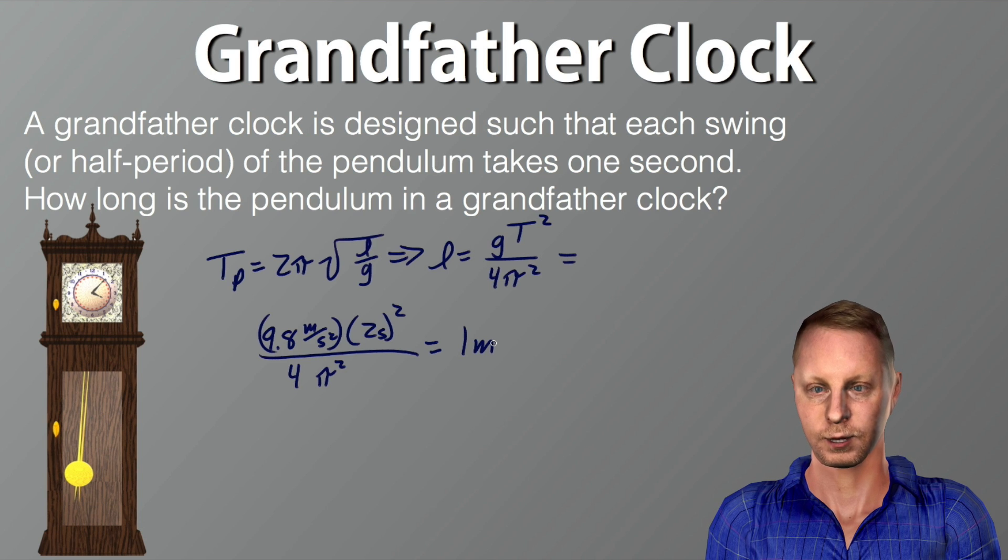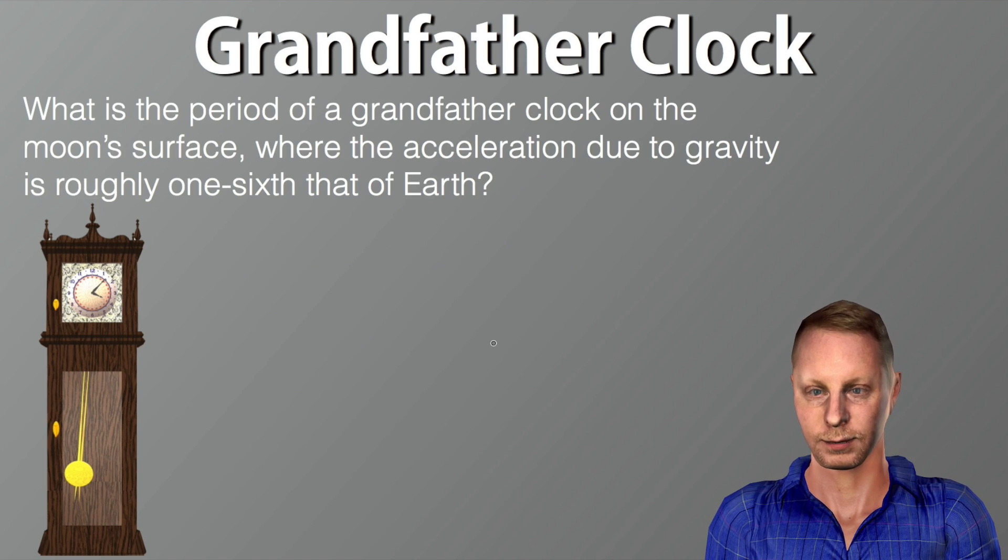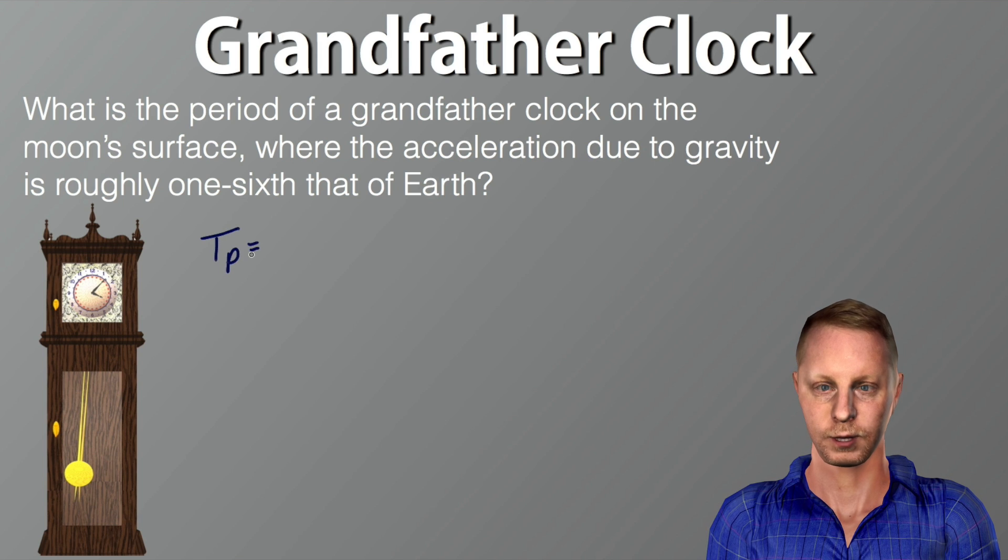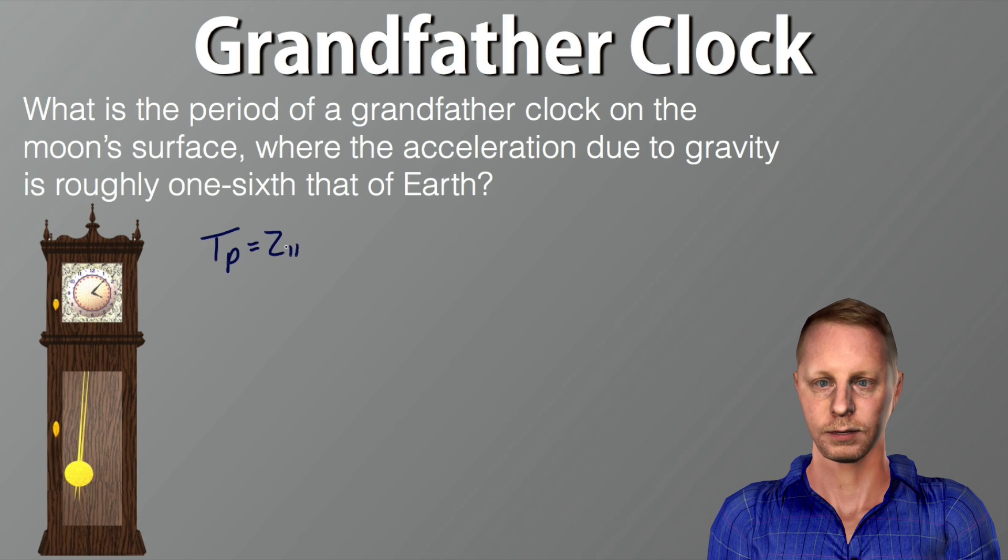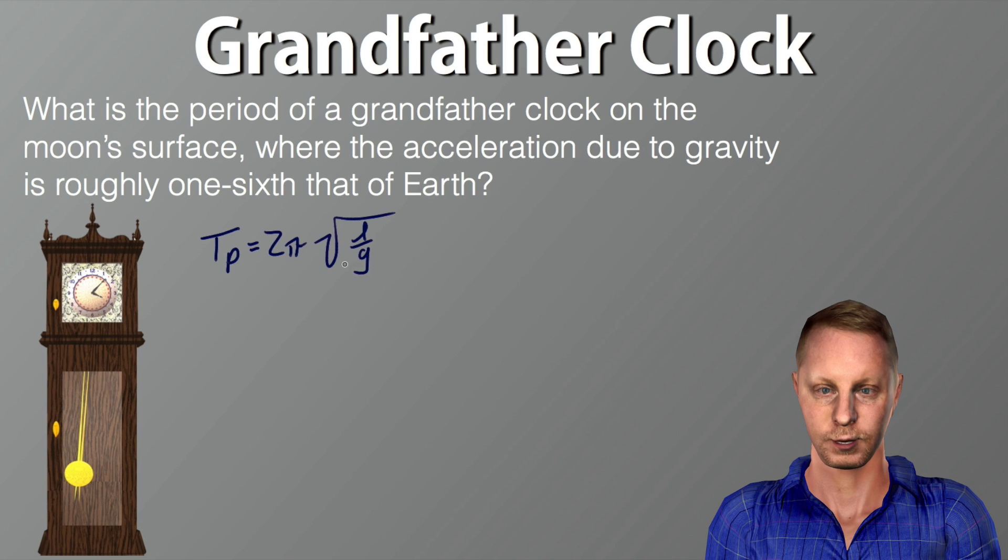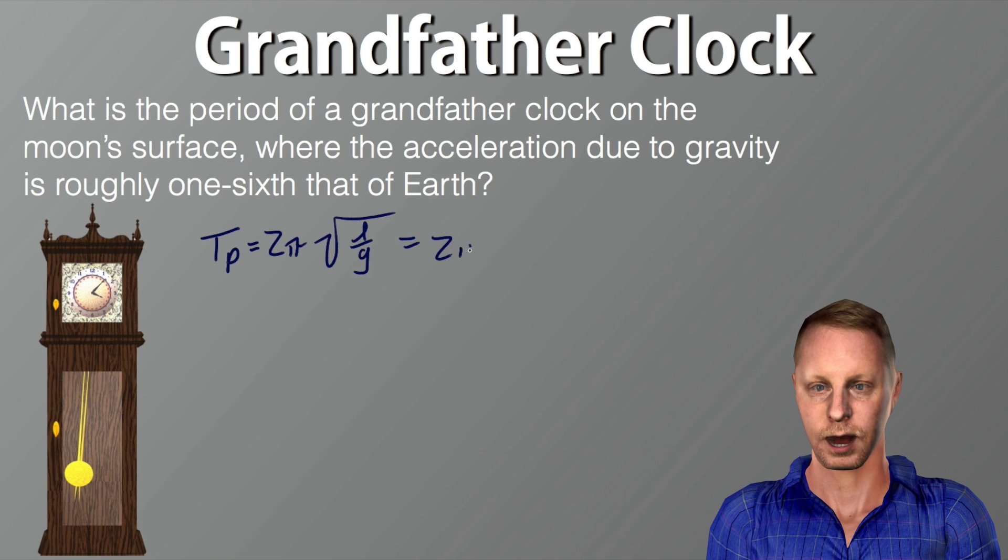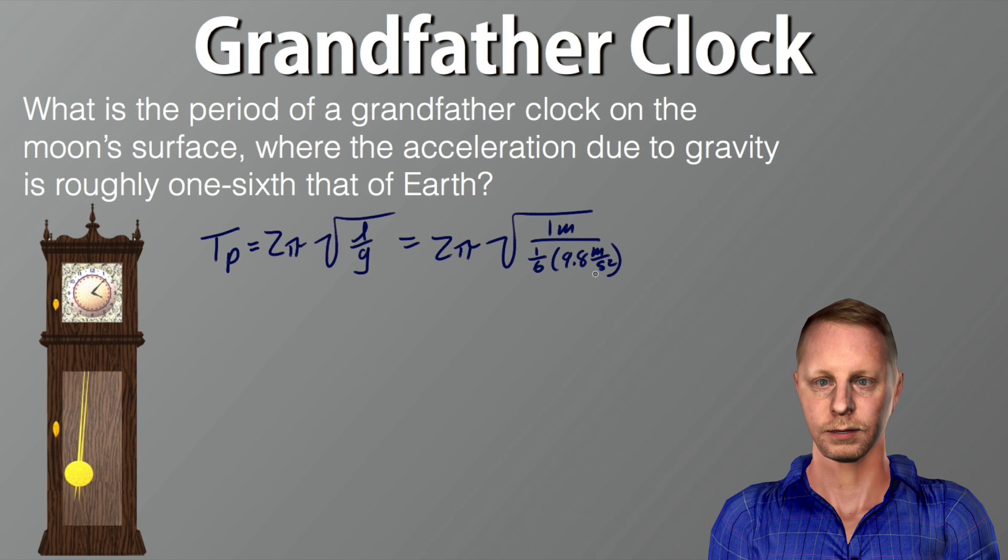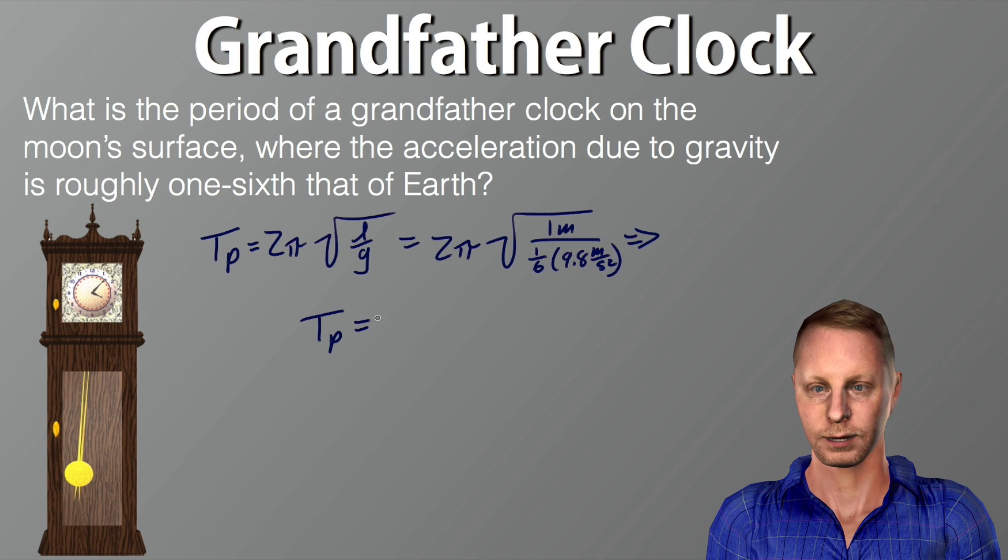How about if instead we take a look at our grandfather clock if we were on the moon, where the acceleration due to gravity is roughly one-sixth that of earth? Well, the same formula applies for the period. The period of the pendulum is 2π square root l over g, which is going to be 2π square root. We know our length is 1 meter. The acceleration due to gravity, though, is one-sixth that of earth, or one-sixth 9.8 meters per second squared. A little bit of calculator work, and this tells me that the period of that same clock, if it were on the moon, would be 4.9 seconds.